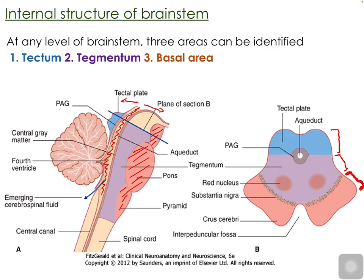The area of the brainstem with the most significant tectum is the midbrain. The tegmentum is very important as it contains many cranial nerve nuclei as well as pathways passing through the brainstem. The basal area — shown in red — is where we find the descending motor fibers: fibers originating from the cortex that carry motor information down through the brainstem to the spinal cord, brainstem nuclei, or cerebellum.